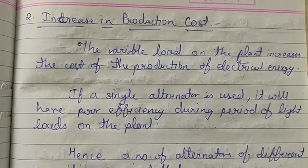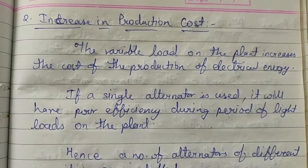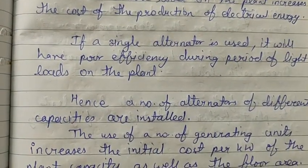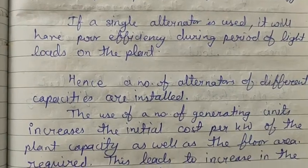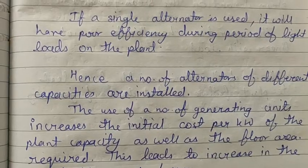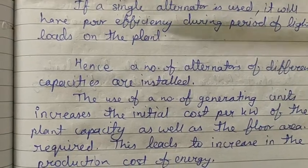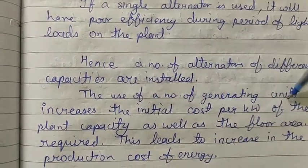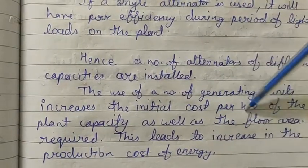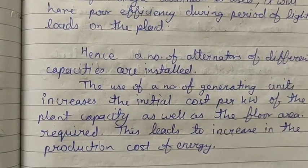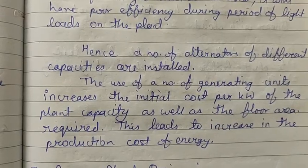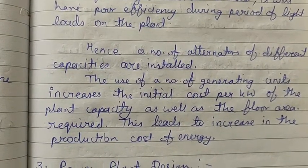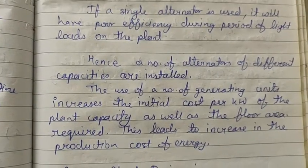During a period of light load, there will be waste. We can use a small alternator for small demand and a full-size alternator for full load. The use of a number of generating units increases the initial cost per kilowatt of the plant capacity, as well as the floor space required. If there is load variation, the installation cost will increase, which is why the plant's production cost will increase.